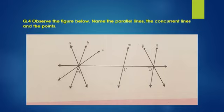Question 4. Observe the figure below. Name the parallel lines, the concurrent lines and the points. Answer. First, parallel lines. Line B, line M, line Q. Line A, line P.